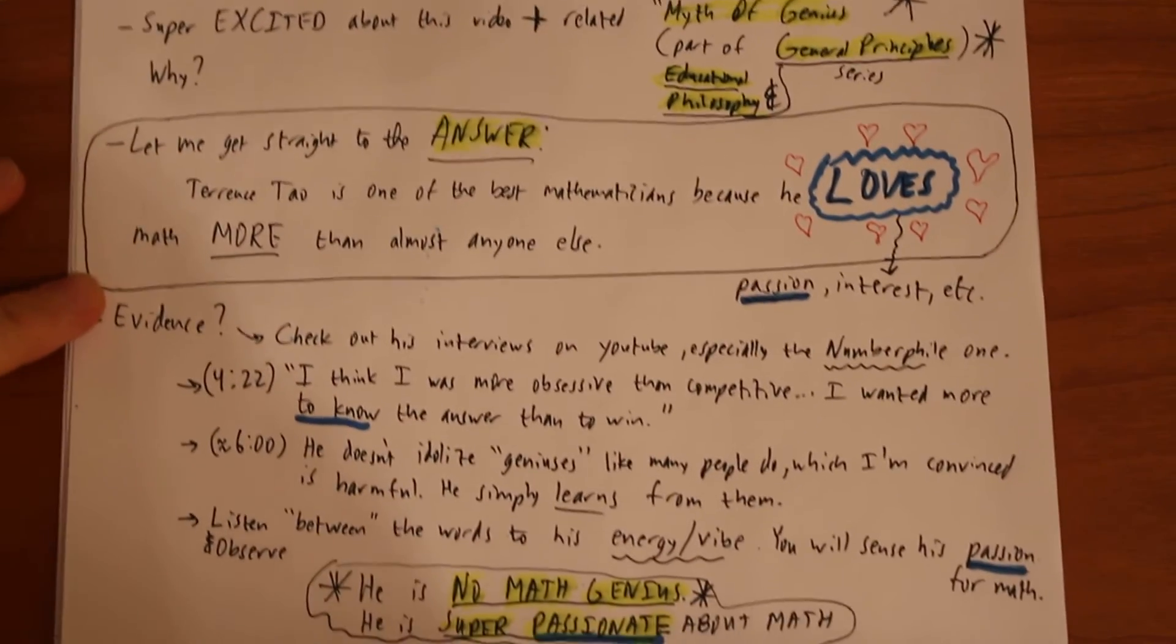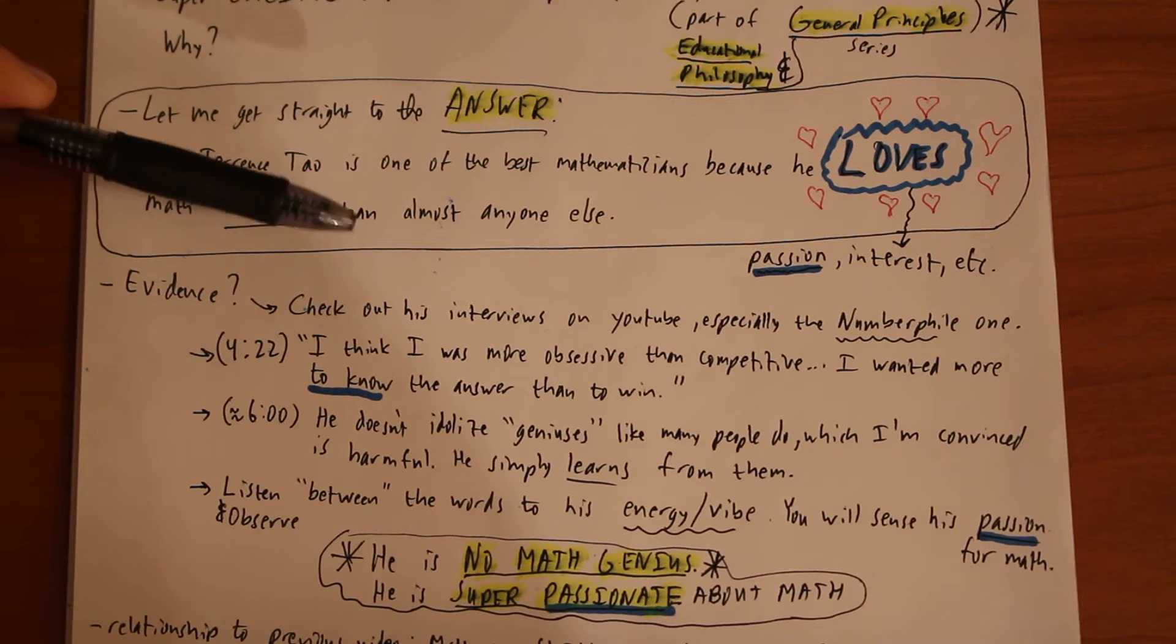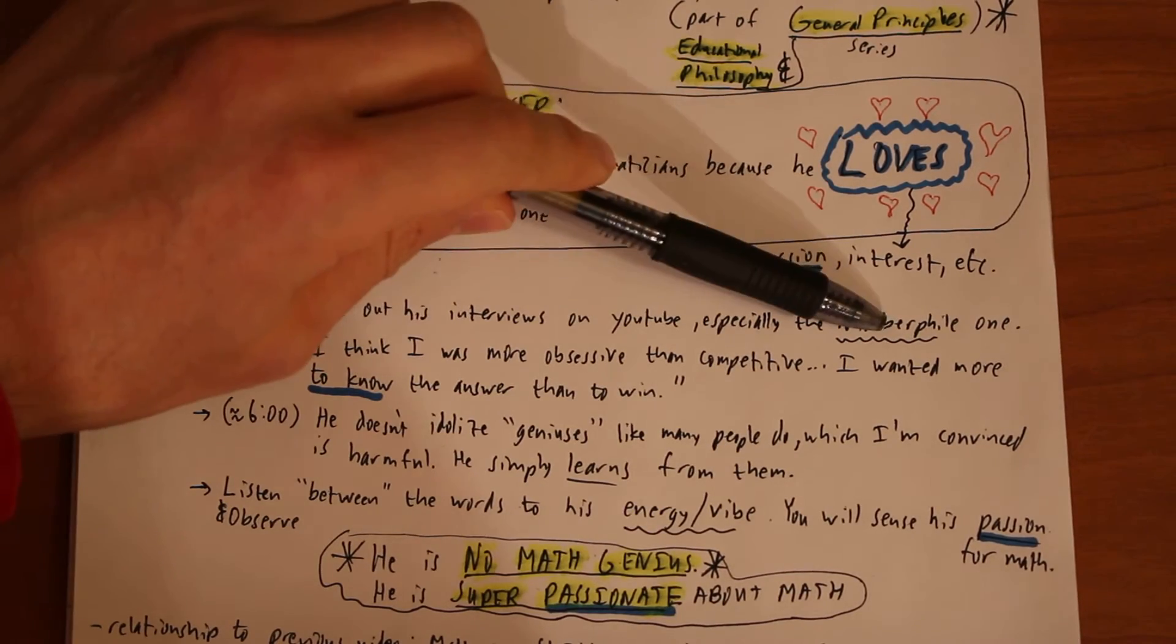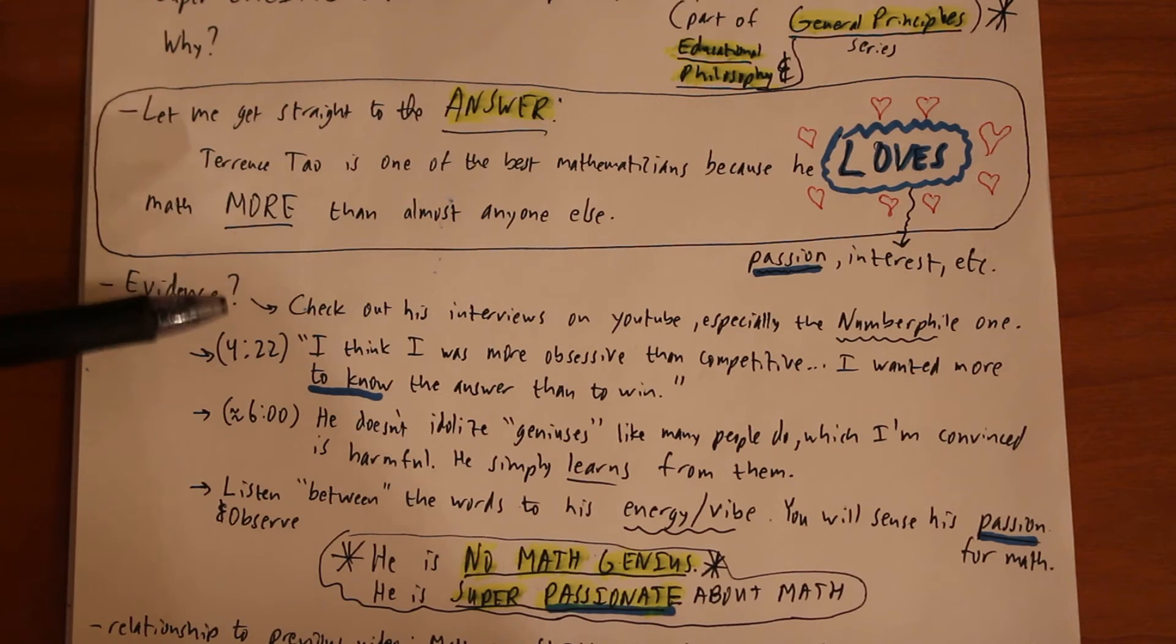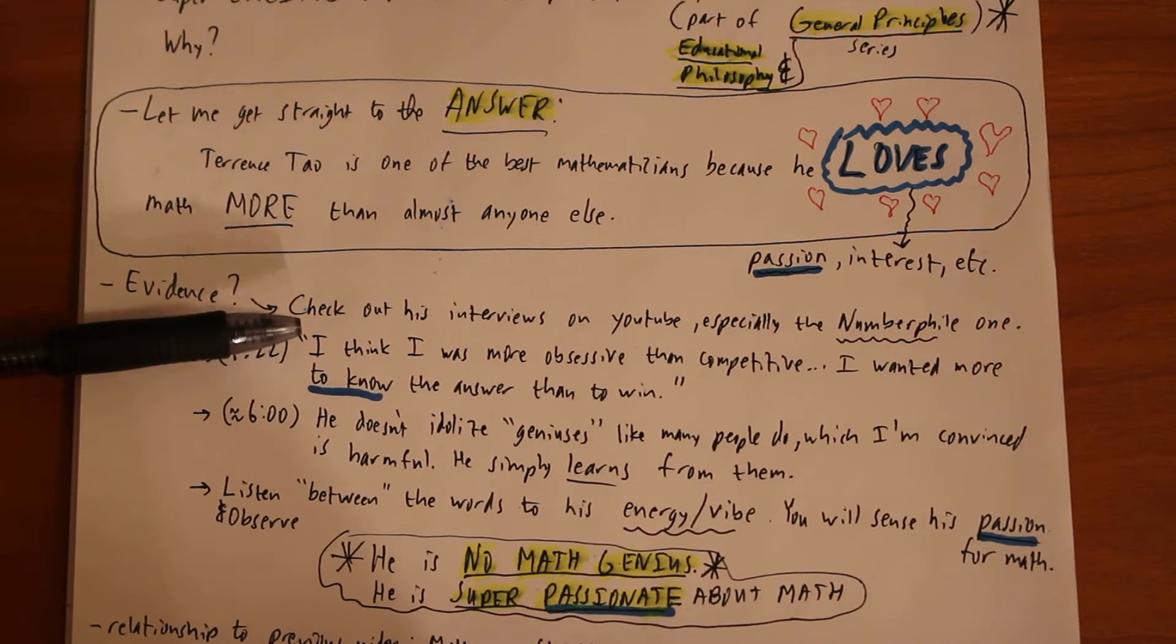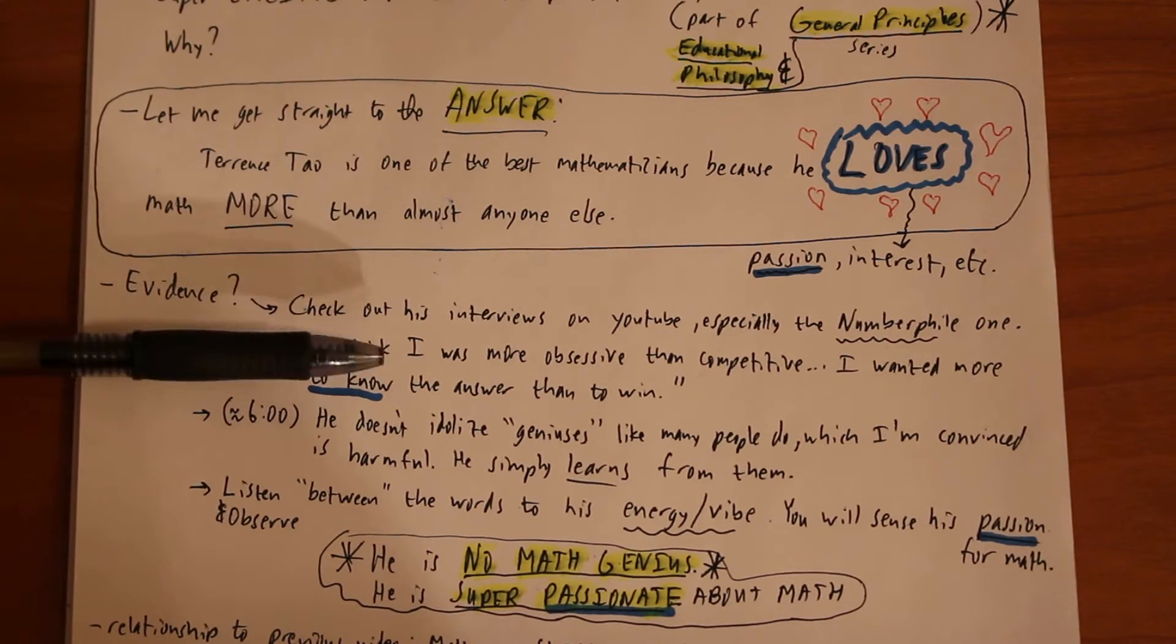So what evidence is there aside from that other myth of genius video that I'm going to do in conjunction with this one? I encourage you guys to watch Numberphile's video 'The World's Best Mathematician' together with this video so you can know what I'm referring to. Check out Terence Tao's interviews in general on YouTube but especially the Numberphile one. These are going to be referring to this one. At 4:22 in the video there's this quote. Terence says: 'I think I was more obsessive than competitive. I wanted more to know the answer than to win.'